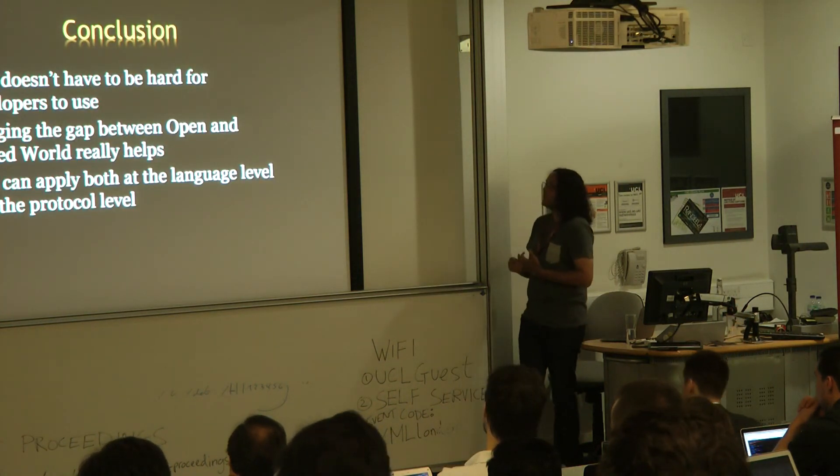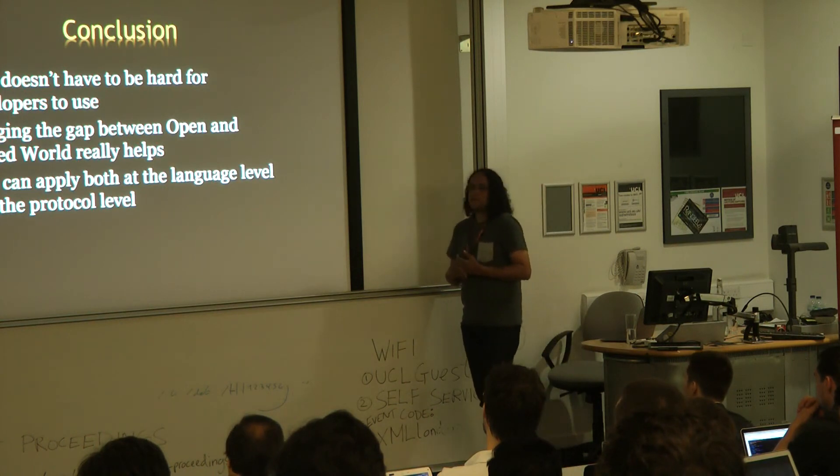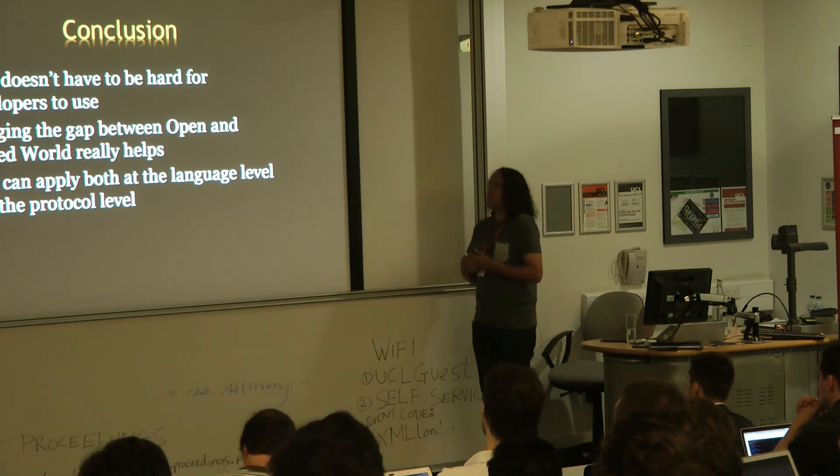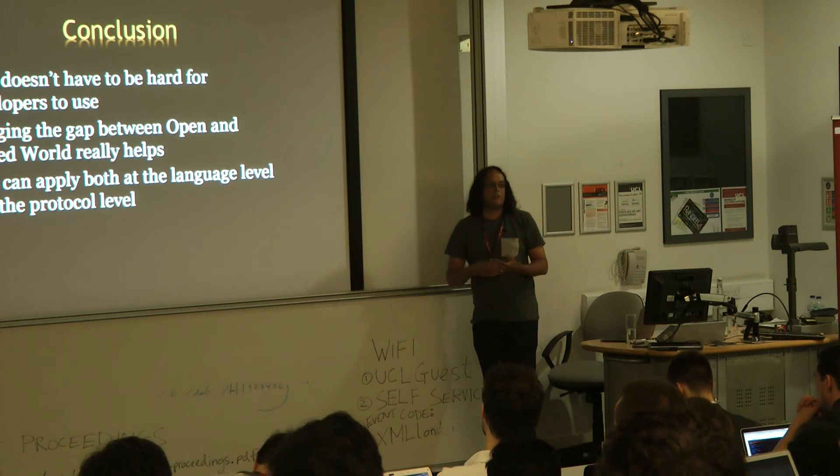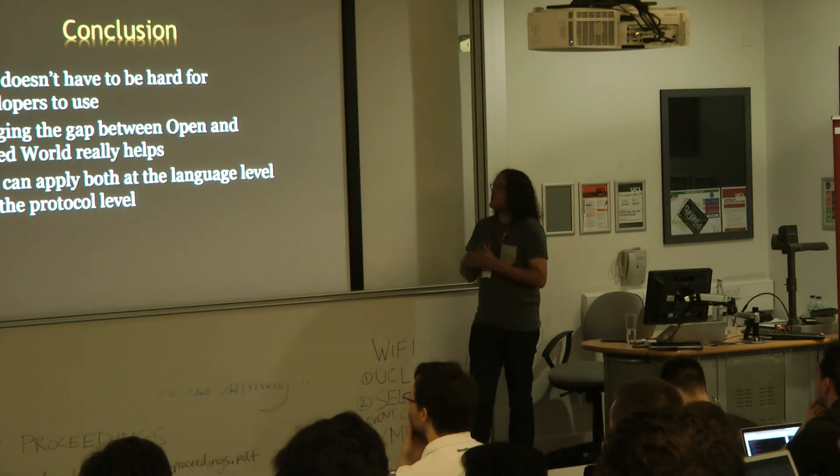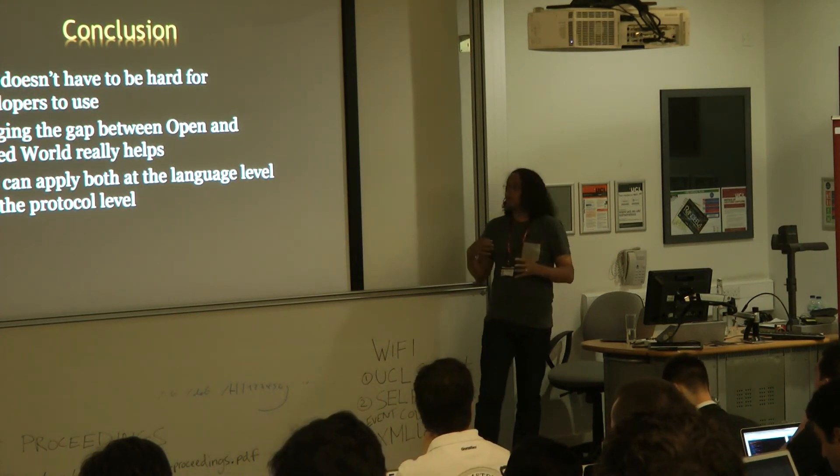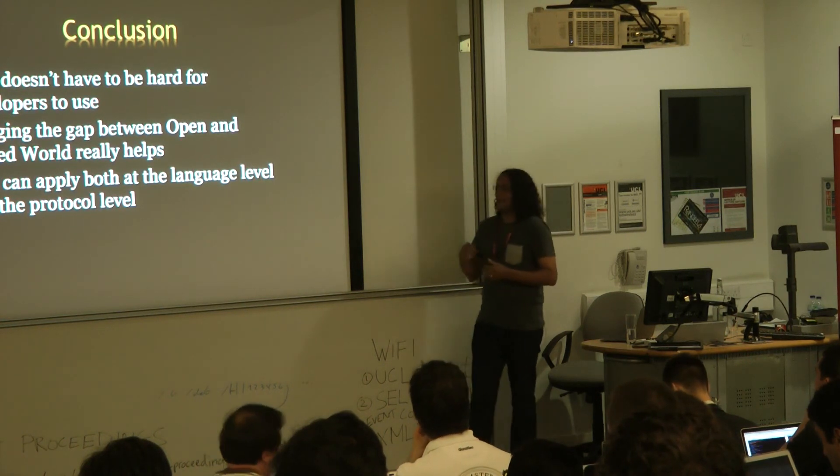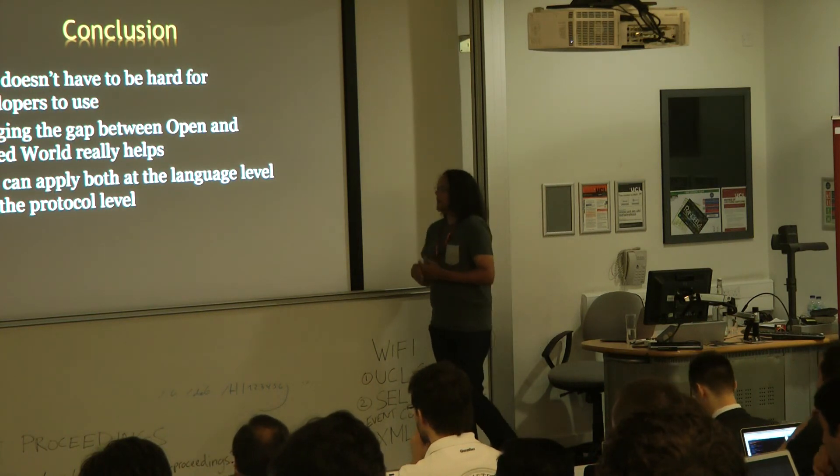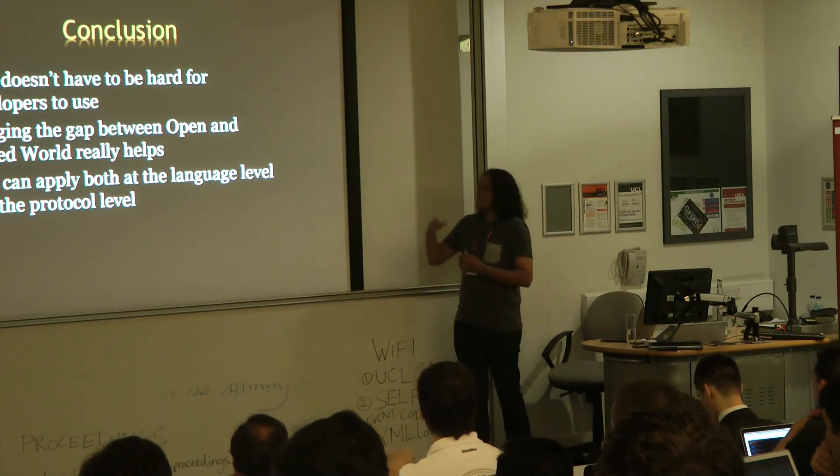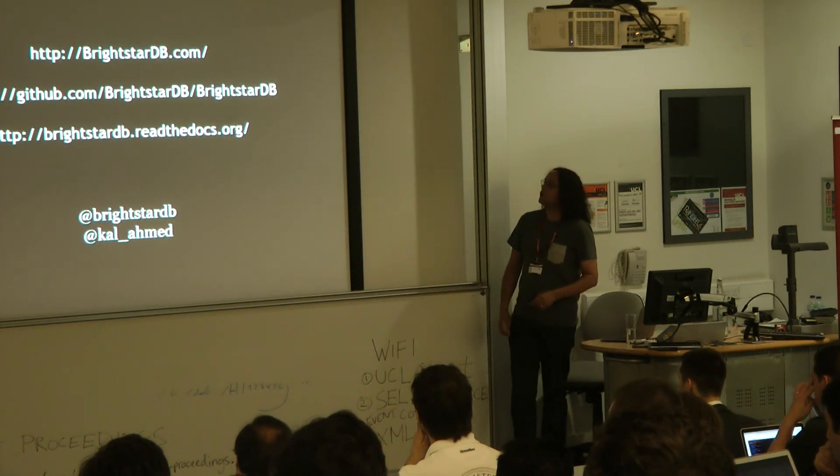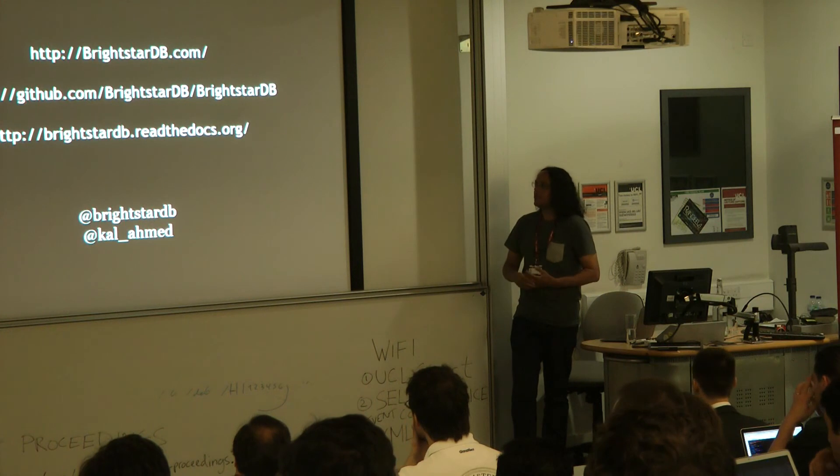So, short conclusion. I don't think RDF has to be hard for developers to use, I think it has a very bad reputation as being hard for ordinary developers. We're all developers, right? And none of us are ordinary. But it does have this bad reputation. I think that one of the reasons for that is that it's very difficult for programmers coming from a traditional programming background to get their head around this open versus closed world. Bridging the gap really helps. And as I would have shown, if I had time, this can apply both at the language level and at the protocol level. But if you'd like to find out more, those are all the URLs that you would need, and the Twitter handles that you would need. Thank you.